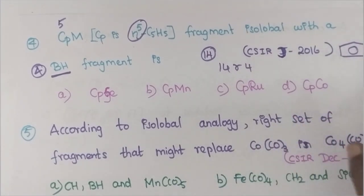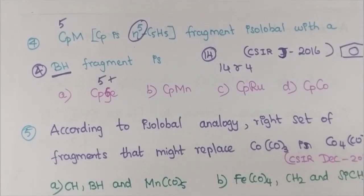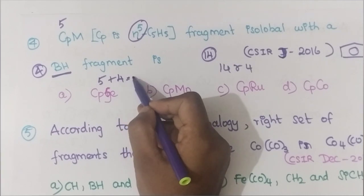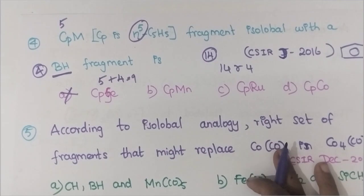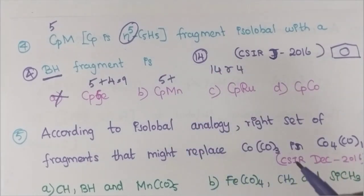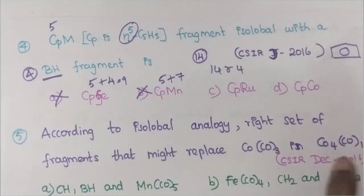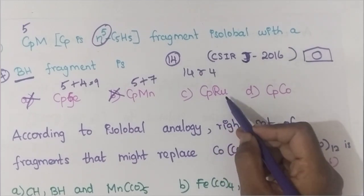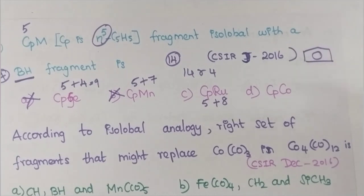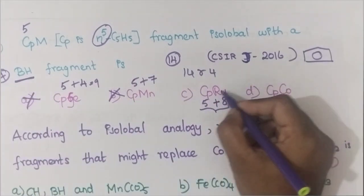Checking options: CpGe — germanium is in the carbon family with 4 valence electrons, so Cp(5)+Ge(4)=9 electrons. Not isolobal with 4. CpMn — manganese has 7 valence electrons (d⁵4s²), so 5+7=12. Not isolobal with 4. CpRu — ruthenium is in the iron family with 8 valence electrons (d⁶4s²), so 5+8=13. Not isolobal with 4.